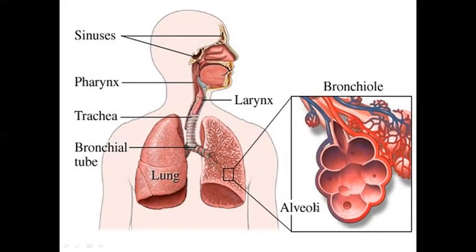The simplest functional unit of the respiratory system is basically the alveoli. The major function of the respiratory system is the exchange of gases, and that exchange of gases happens at the alveolar stage. Alveoli are very much structured — they look like a bunch of grapes. This is where the exchange of gases between the atmosphere and your lungs occurs.